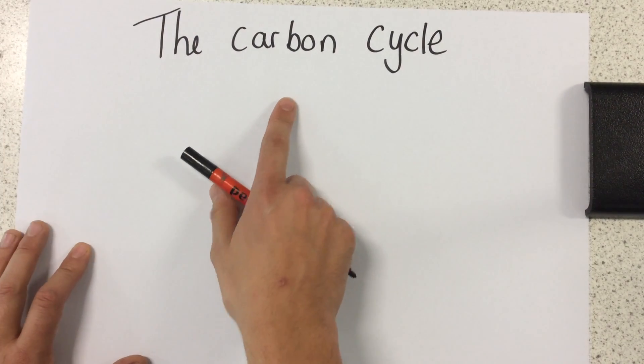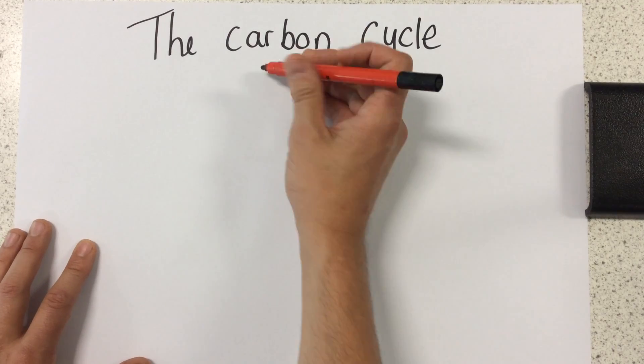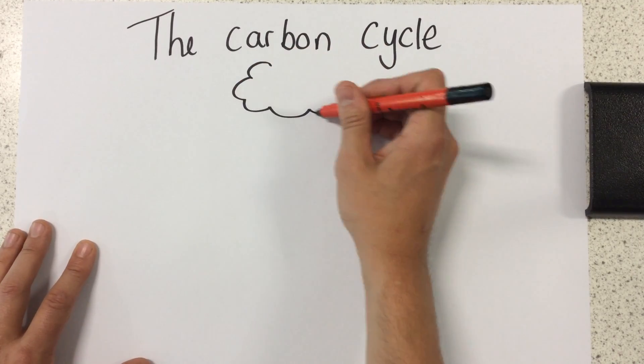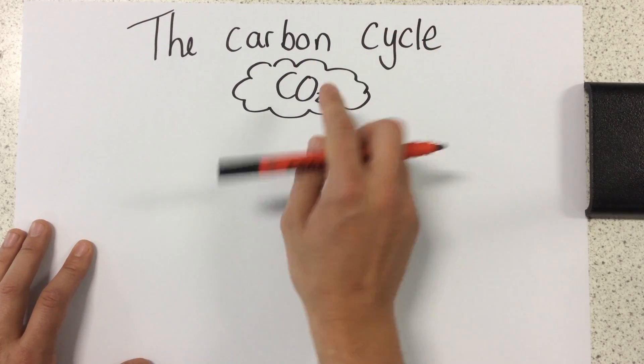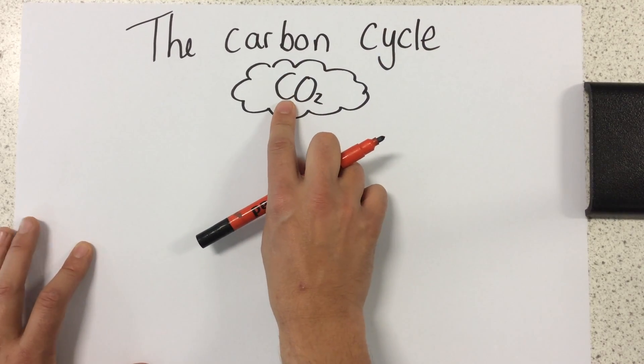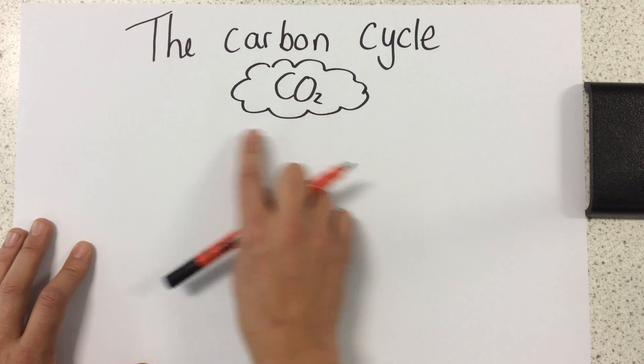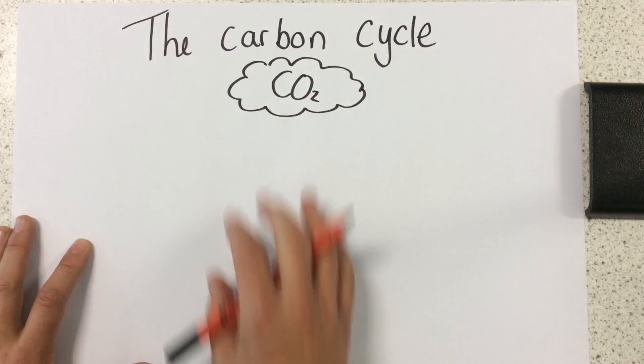Lots of people get overwhelmed by remembering the carbon cycle, so the best way to do it is just step by step. To begin with, I'm thinking about the carbon dioxide that's in the atmosphere. Carbon exists, some carbon exists in a gaseous form as carbon dioxide in the atmosphere.